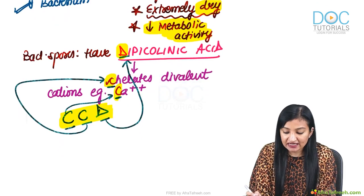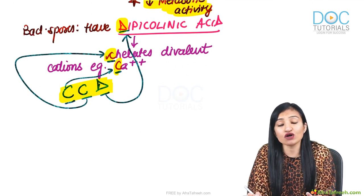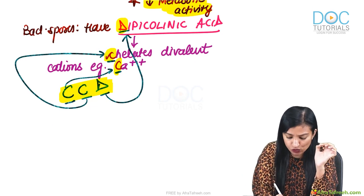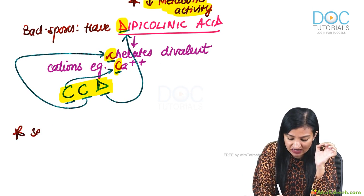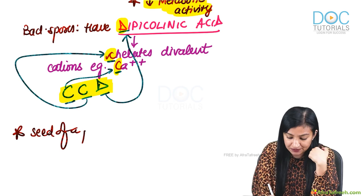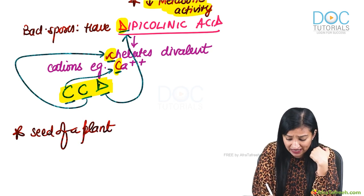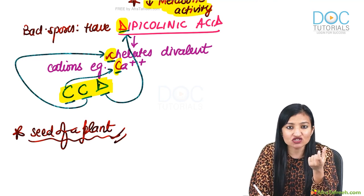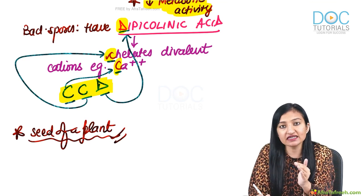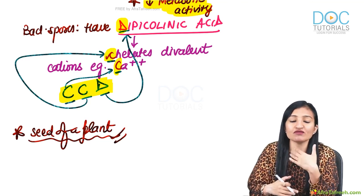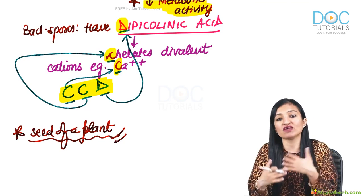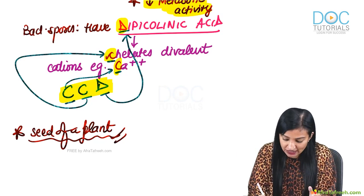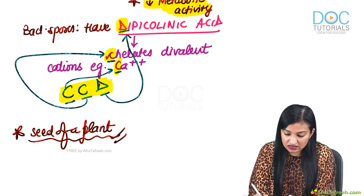A very good analogy for bacterial spores is that they are very similar to the seed of a plant. Just like a bacterial spore, the seed of a plant is a very dry structure, but if you plant it in the soil and water it — meaning if you expose it to favorable conditions — a nice plant grows out of that seed.